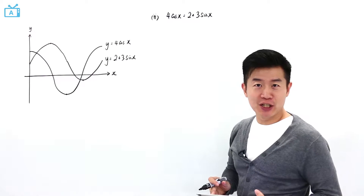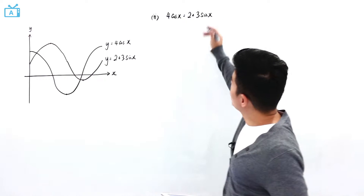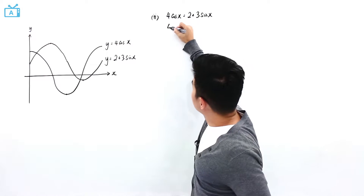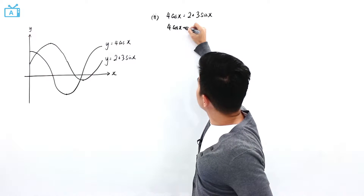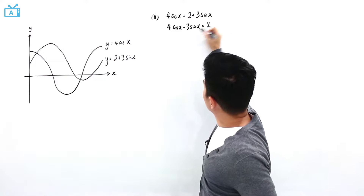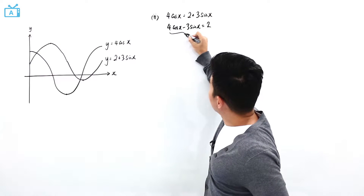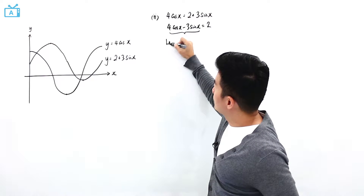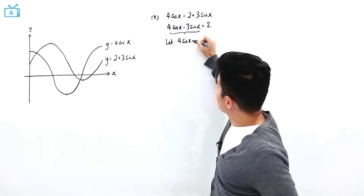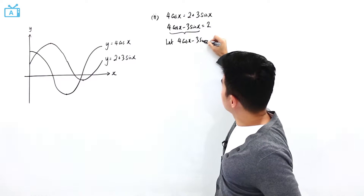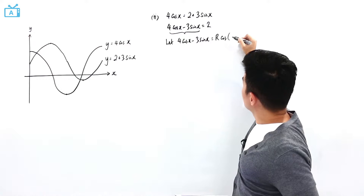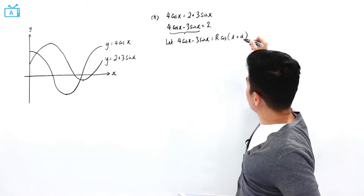What we have here is an R formula question. I'm going to shift 3 sine x over to the left hand side, which will give me 4 cosine x minus 3 sine x equals 2. For this I'm going to apply the R formula, so I'll let 4 cosine x minus 3 sine x be equal to R cosine(x + α).